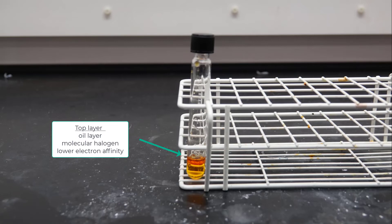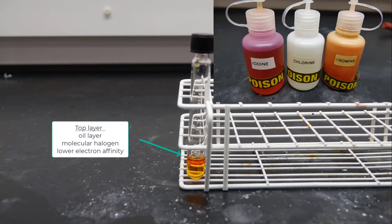The oil layer will be on top and that is where you should see the color of one of the molecular halogens. So if the top layer is pinkish purple then iodine is in the oil layer. If there's no color in the top layer then chlorine must be there, and if you see orange then bromine is in the top layer.